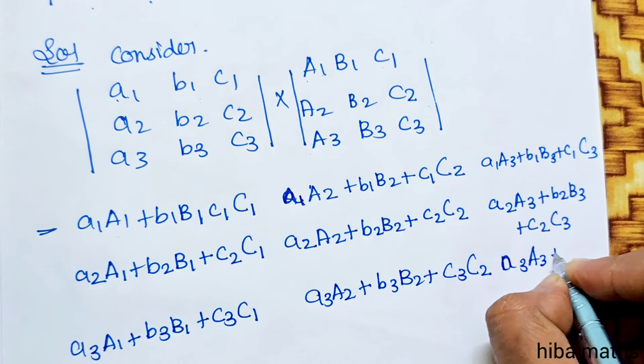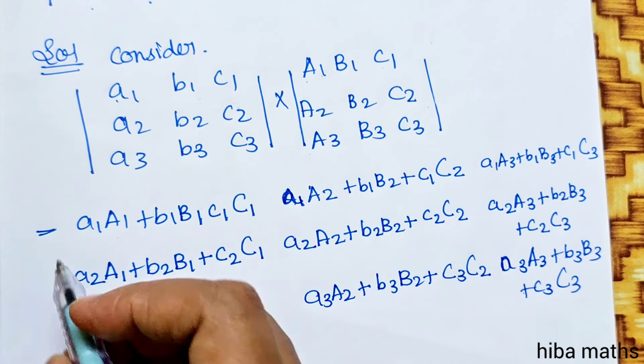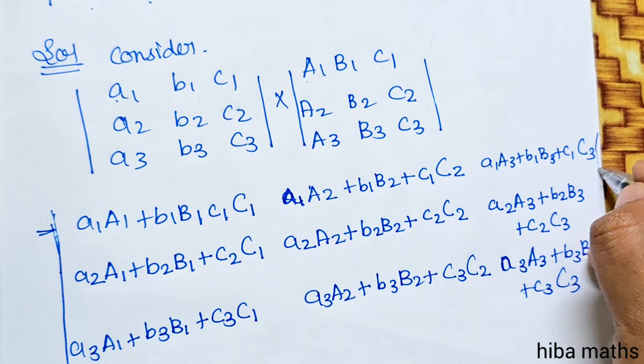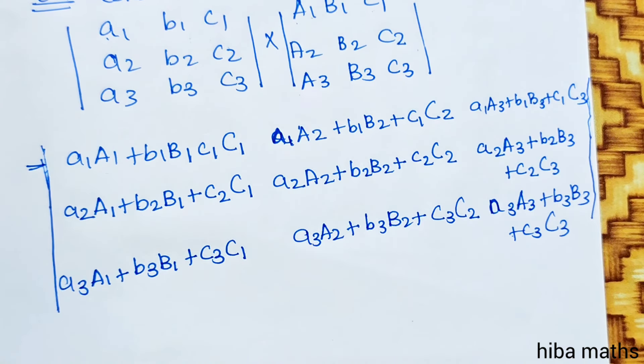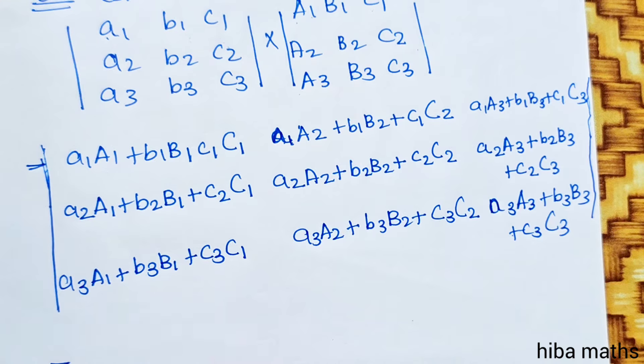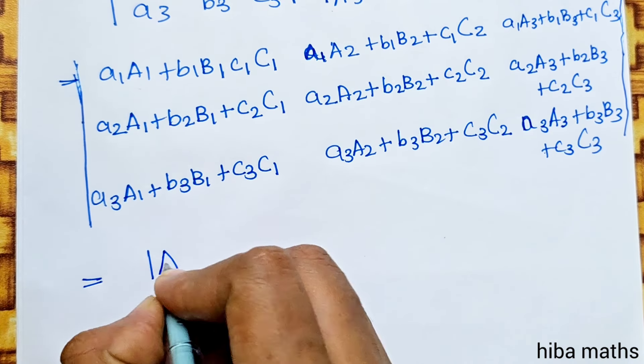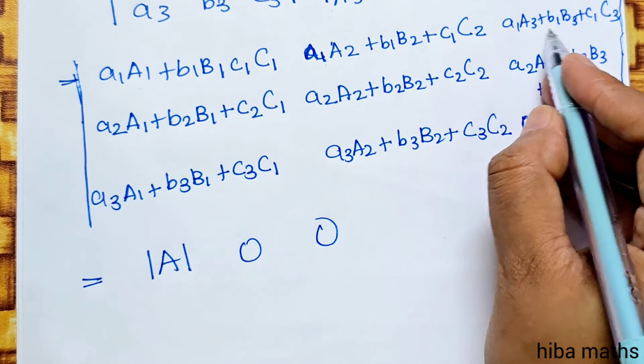Third row: A3 A1 plus B3 B1 plus C3 C1, A3 A2 plus B3 B2 plus C3 C2, A3 A3 plus B3 B3 plus C3 C3.